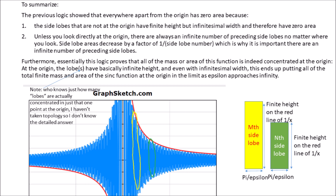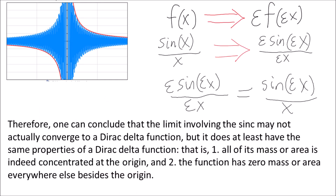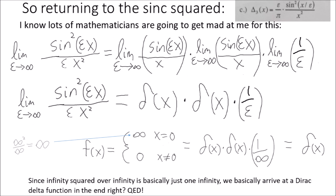Essentially this logic proves that all of the mass or area of this function is indeed concentrated at the origin. At the origin, the lobes have basically infinite height, and even with infinitesimal width, this ends up putting all of the total finite mass and area of the sinc function at the origin in the limit as epsilon approaches infinity. Therefore, one can conclude that the limit involving the sinc may not actually converge to a Dirac delta function, but it does at least have the same properties of a Dirac delta function: all of its mass or area is concentrated at the origin, and the function has 0 mass or area everywhere else. So returning to the sinc squared — since infinity squared over infinity is basically just one infinity, we basically arrive at a Dirac delta function. QED.